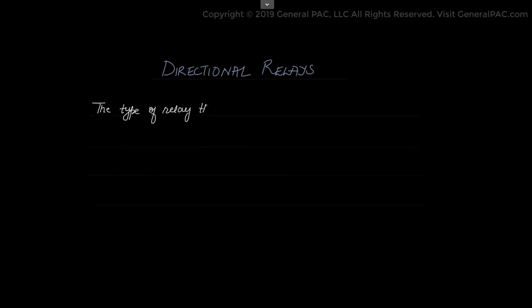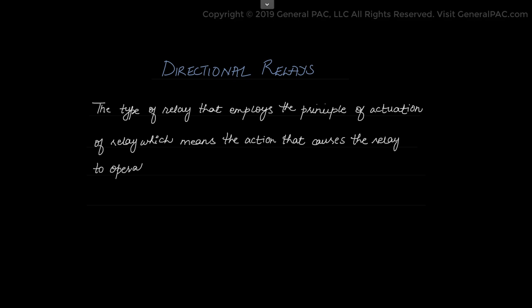The next part is the directional relays. This type of relay employs the principles of actuation of relay which means the action that causes the relay to operate when the fault current flows into the relay in any particular direction. If power flows in the opposite direction, the relay will not operate.